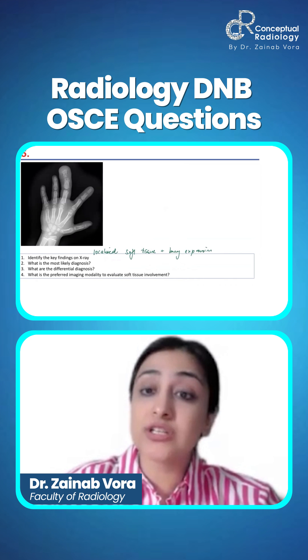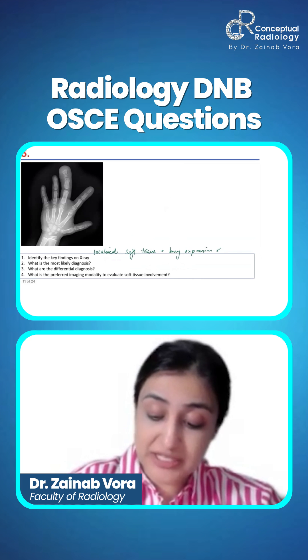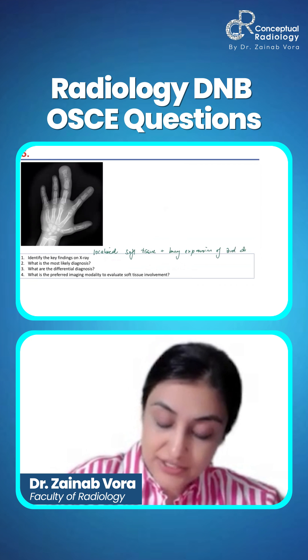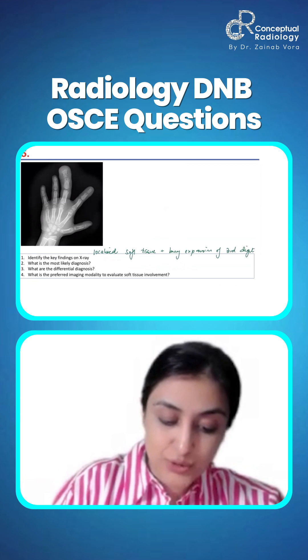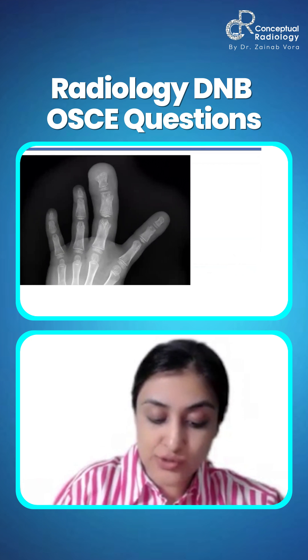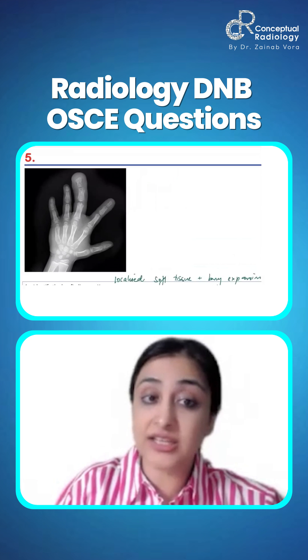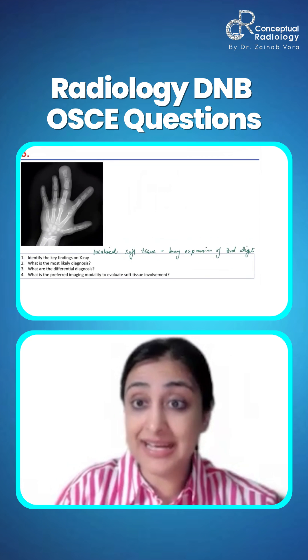This is where you see a localized soft tissue plus bony expansion of the third digit. Do you see any subperiosteal erosion or any irregularity? Nothing — it's a diffuse swelling. So, what is the most likely diagnosis?